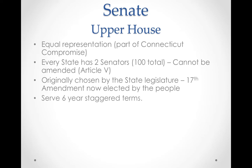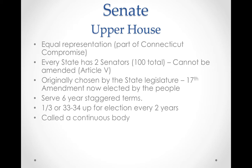Senators serve for six years, and they have staggered terms, which means one-third — about 33 senators — are up for election every two years. Two years you'll have one set of 33, two years later a different 33, and then two years later the remaining 34, so you have a continuous body that never can completely change. The House of Representatives has all 435 members up for re-election every two years, but in the Senate it's only one-third.